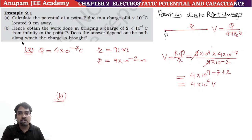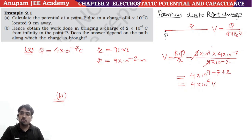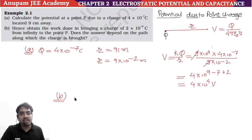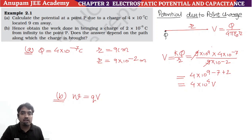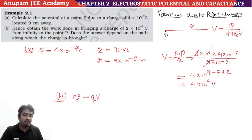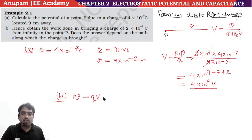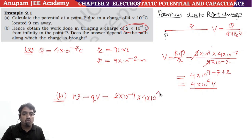Does the answer depend on the path along which the charge is brought? We know that electric force is conservative, so it does not depend on the path. Work done is W = QV, since potential V = W/Q means work done to bring a unit positive charge from infinity to any point. Here Q = 2×10⁻⁹ coulomb and V = 4×10⁴ volt, giving W = 8×10⁻⁵ joule.